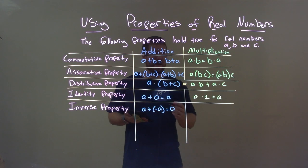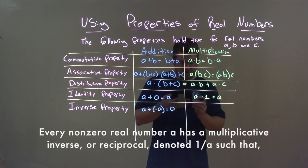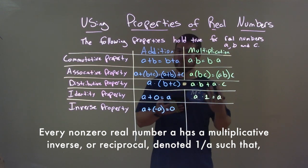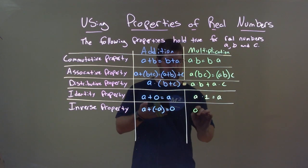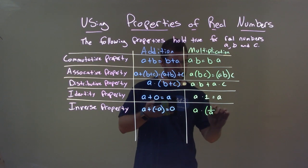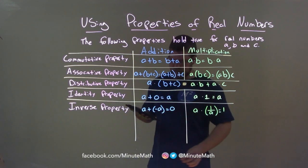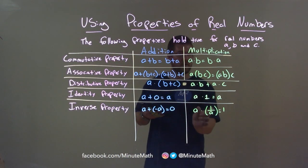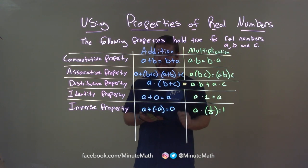We're also going to have a multiplicative inverse property. Every non-zero real number A has a multiplicative inverse or reciprocal, denoted 1 over A, such that A times 1 over A equals 1. Essentially, they cancel each other out when you multiply them to always get 1, for any real number A where A is not equal to zero.